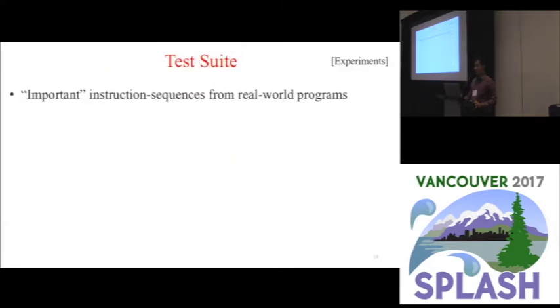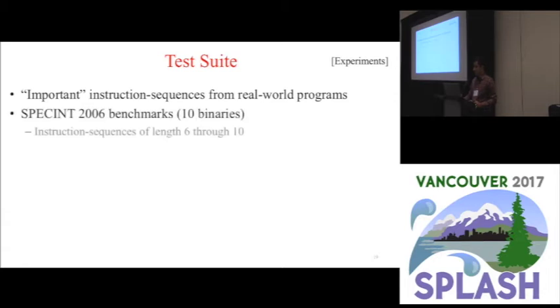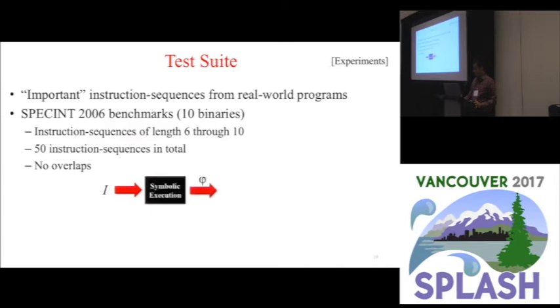Okay, so how do we test that all this works? We created a corpus of QFBV formulas harvested from ten binaries in the SPEC 2006 benchmark suite, again using symbolic execution. We harvested the most frequently occurring sequences of lengths six to ten in each of the ten binaries to create a 50 instruction sequence test suite. We did this in a manner to avoid overlaps. For example, if you picked the most commonly occurring six length sequence, you might otherwise have found something which is going to be a prefix of the most commonly occurring seven length sequence. If that occurred, we just threw it out.